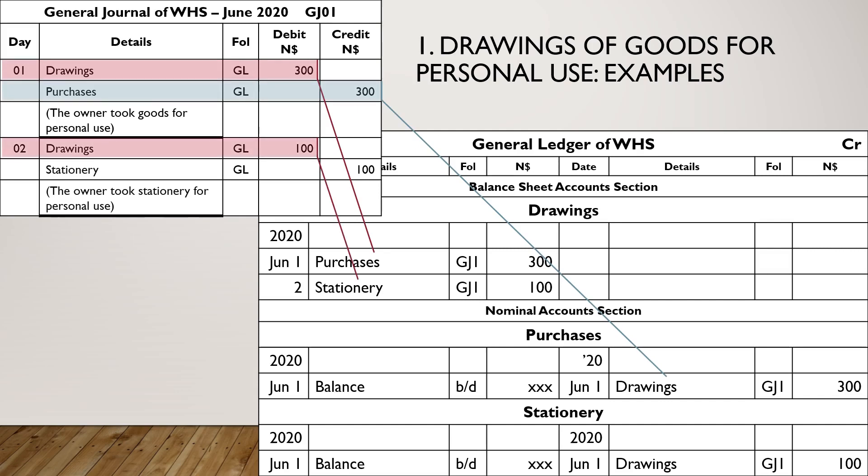Next drawings example: debit Drawings, details Stationery; credit Stationery, details Drawings.